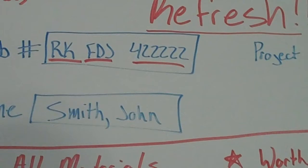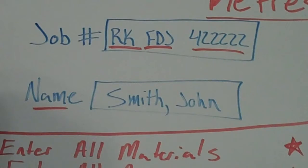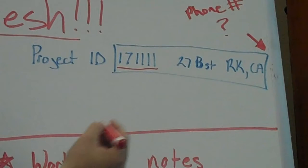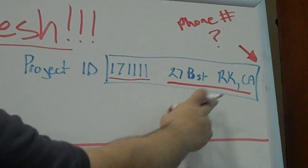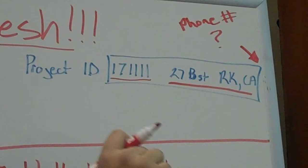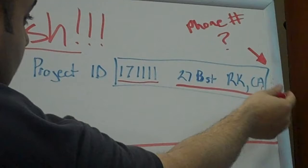This is very helpful inside the store. Below that, on the same side, is name: last name, comma, first name, just like we do in Rollmaster. And then in the Project ID field, we want to put the project ID number and the customer address — something like 27 B Street, Rockland, California. The only thing I'm not sure about yet, which Steve will be confirming with us tomorrow in his meeting with the estimators, is whether we want the phone number. If the answer is yes, we're going to put it at the end of the address.